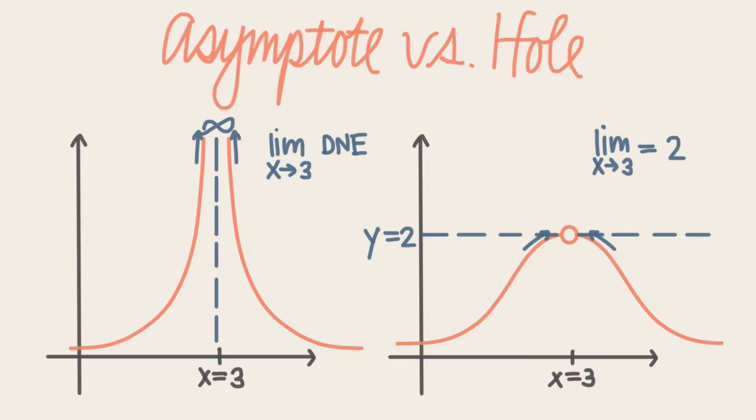In the function with the vertical asymptote, on the other hand, the function goes to positive infinity as it approaches x equals 3. So the limit doesn't exist as x approaches the vertical asymptote, which makes vertical asymptotes very different from removable discontinuities.